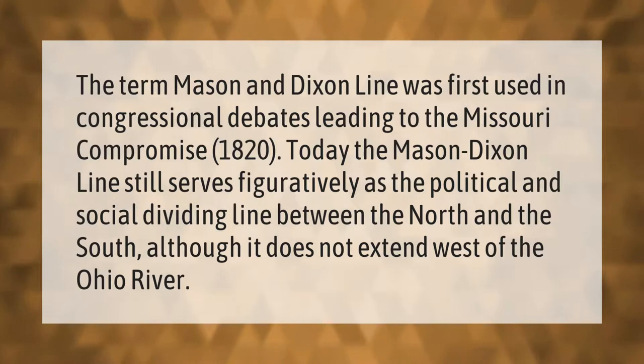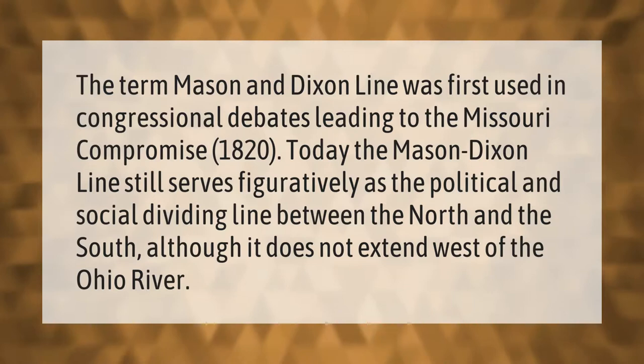The term 'Mason and Dixon line' was first used in congressional debates leading to the Missouri Compromise of 1820. Today, the Mason-Dixon line still serves figuratively as the political and social dividing line between the North and the South, although it does not extend west of the Ohio River.